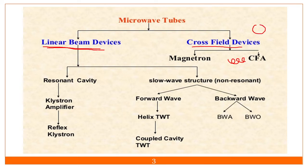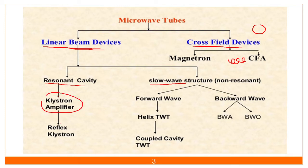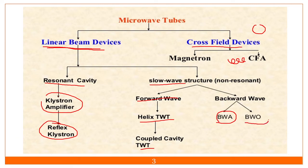As far as the linear beam, there are two types: the resonant cavity and the slow wave structure, which is non-resonant. In the resonant cavity there are two types — the klystron amplifier and the reflex klystron. In the slow wave structure you will find the forward wave helix and the CW tube, and the backward wave amplifier (BWA) and backward wave oscillator.